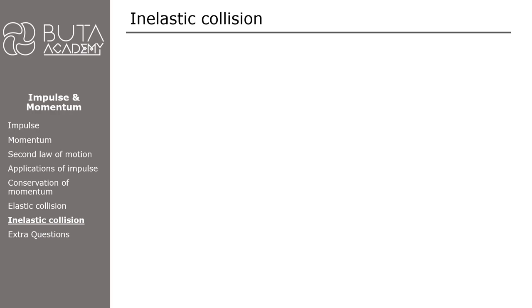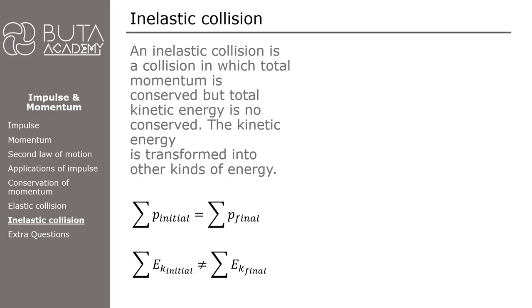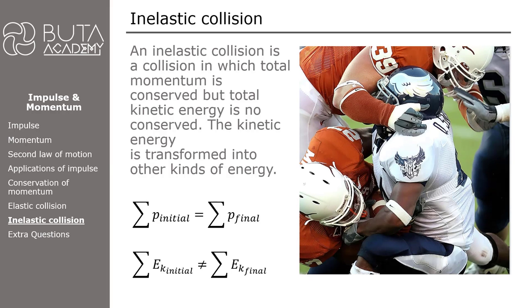An elastic collision conserves both total kinetic energy and total linear momentum. If a collision is inelastic, total linear momentum in an isolated system remains the same but kinetic energy changes — some is converted to heat or sound energy. Following an elastic collision, each object moves independently. In an inelastic collision, objects may move independently or together. A collision is wholly inelastic if all objects move together after the collision; if they move independently, additional calculations are needed to determine whether it is elastic or inelastic.